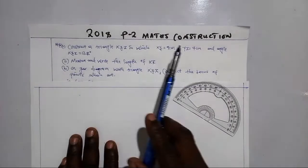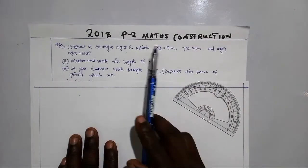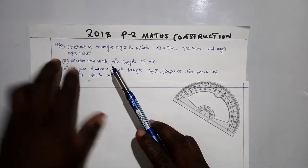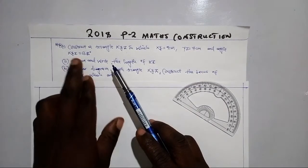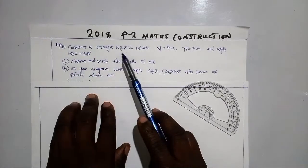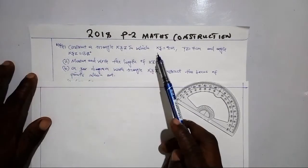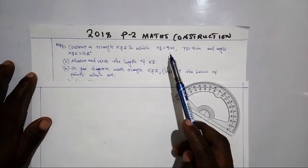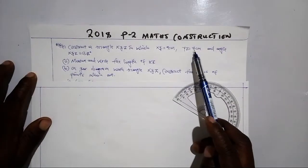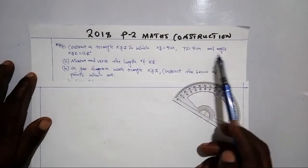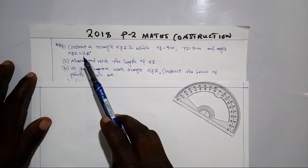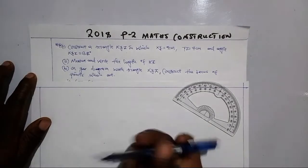This is the 2018 Paper 2 math construction question, which was on question 4. We are asked to construct a triangle XYZ in which XY equals 9 centimeters, YZ equals 7 centimeters, and the angle XYZ equals 80 degrees.